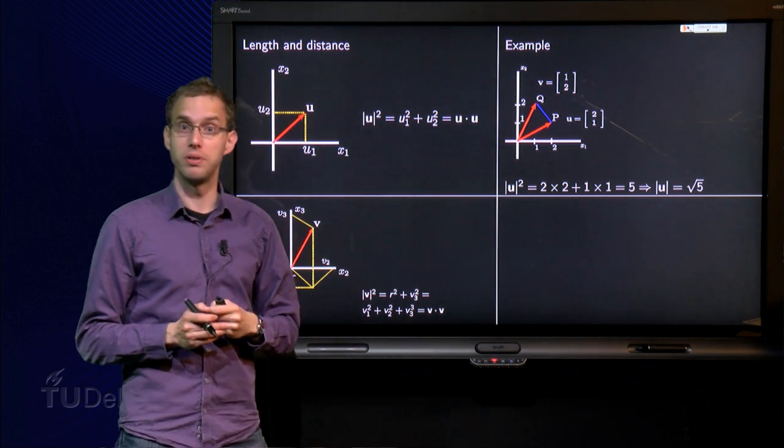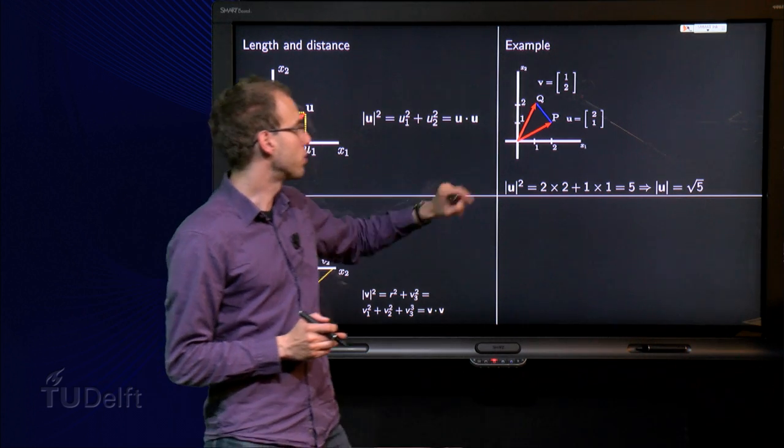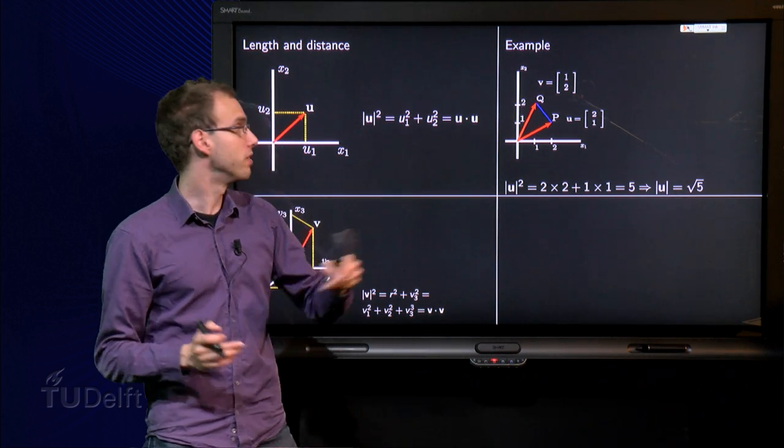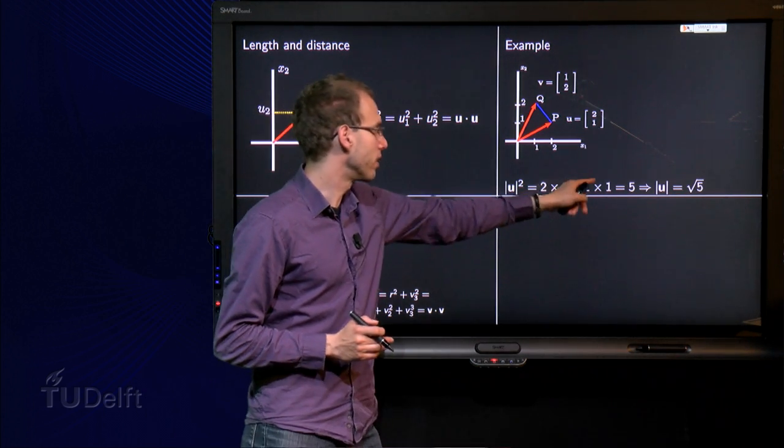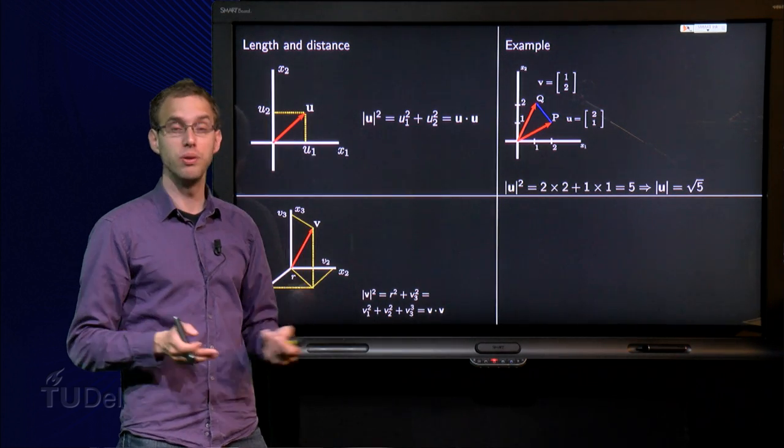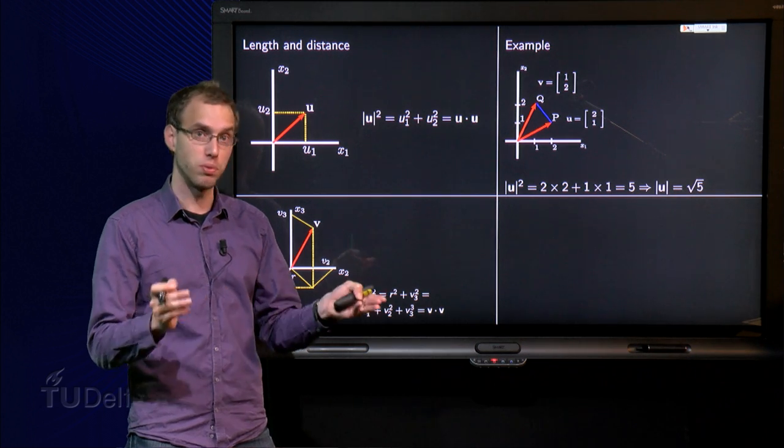And then we know how to compute the length of u. The length of u squared is the inner product of u with itself, so 2 times 2 plus 1 times 1, which is 4 plus 1 equals 5. So the length of u is the positive square root. Length is positive, of course.